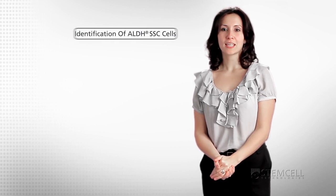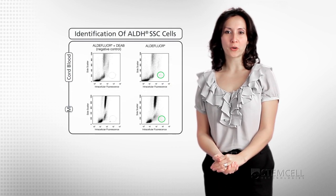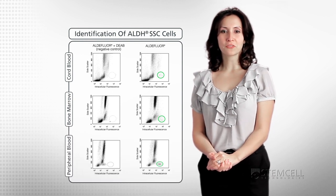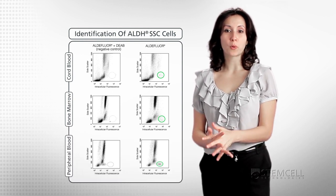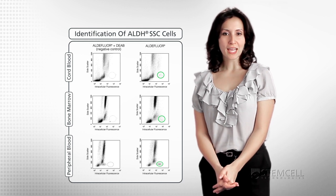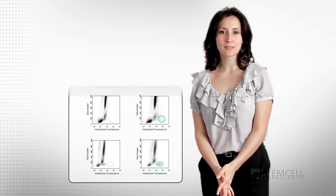The ALDEFLOR assay was originally developed and optimized for detection of hematopoietic stem and progenitor cells in human cord blood, bone marrow, and peripheral blood. For detection of ALDH activity in non-hematopoietic and cultured cells, different assay conditions may be needed to achieve optimal results.